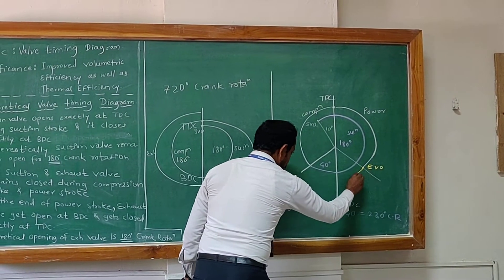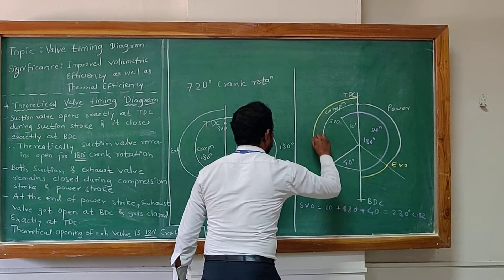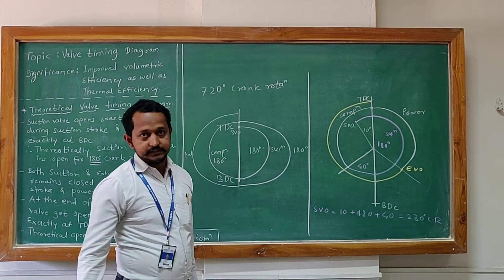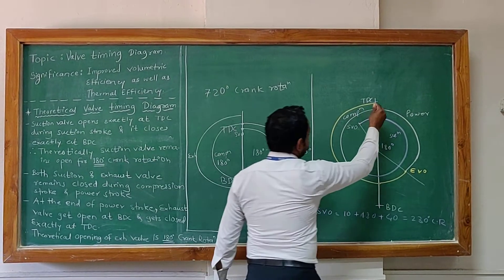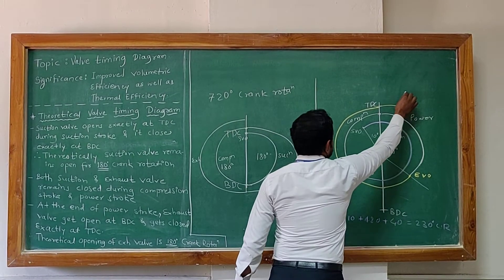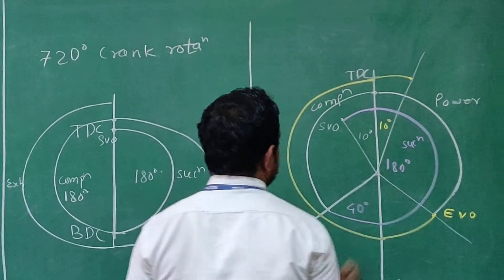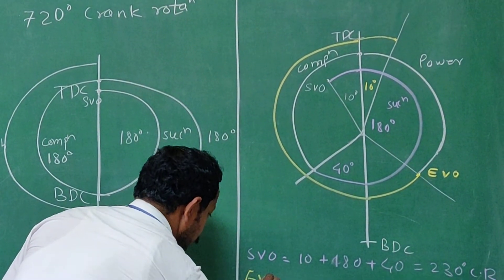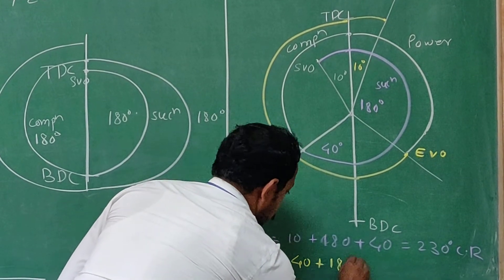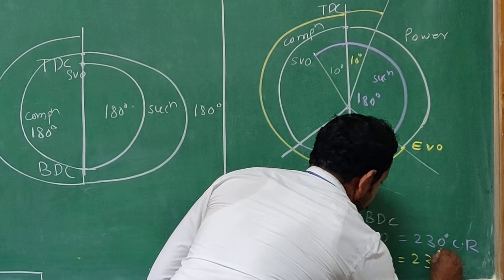It will then be open for the next 40 degrees. It will have its original theoretical opening of 180 degrees. Still, it will not be closed at TDC. It will be kept open further up to 10 degrees. So if you see the total opening of the exhaust valve, the exhaust valve will be open for 40 plus 180 plus 10, that is almost 230 degrees crank rotation.